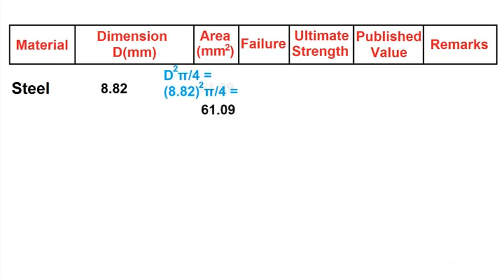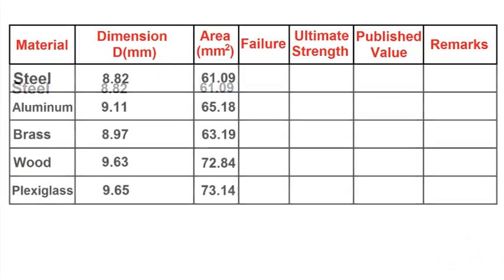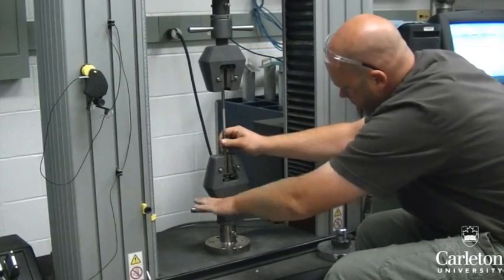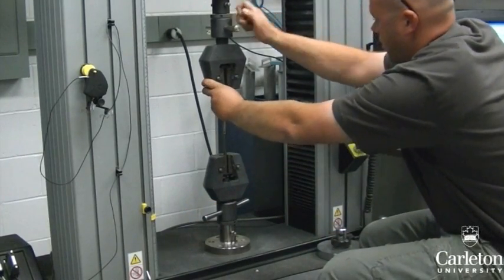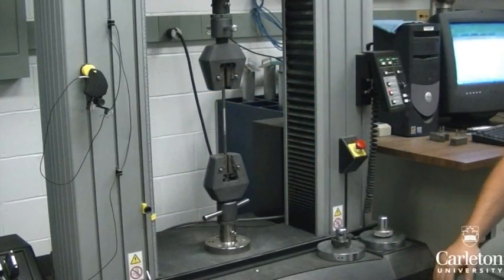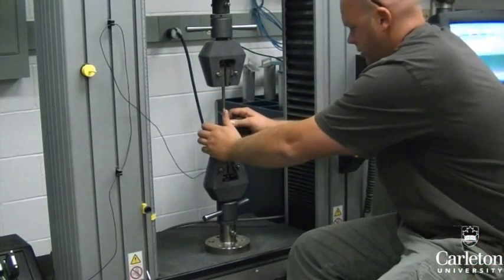Next calculate the area of each specimen. Now we can start testing the materials. We will be starting with steel. Each specimen will be placed in the testing machine by the technician. They will clamp the ends and attach a strain gauge.